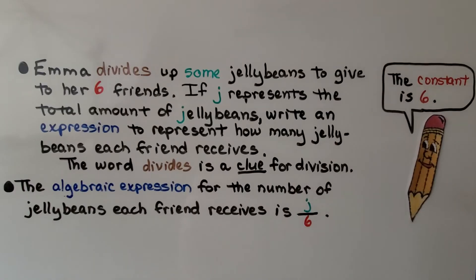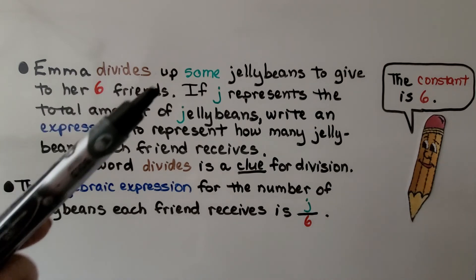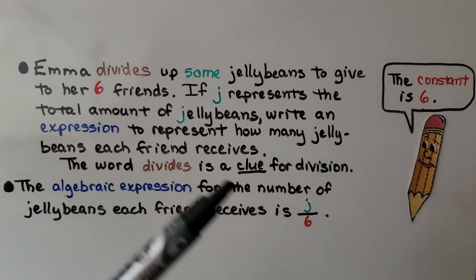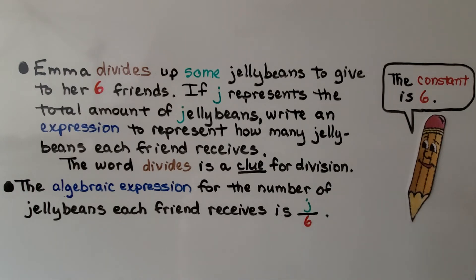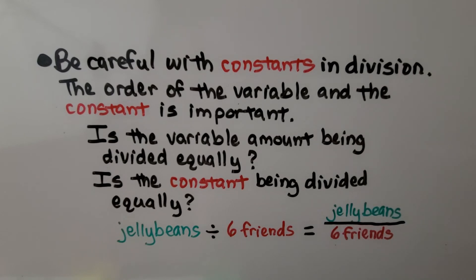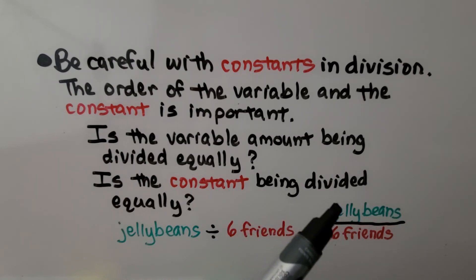Emma divides up some jelly beans to give to her six friends. If j represents the total amount of jelly beans, write an expression to represent how many jelly beans each friend receives. The word 'divides' is a clue for division. The constant is six; we don't know how many jelly beans she started with, so we use j as a variable. The algebraic expression is j divided by six. Be careful with constants in division — the order of the variable and constant is important. If a number of jelly beans is divided by six friends, jelly beans is the numerator and six is the denominator.